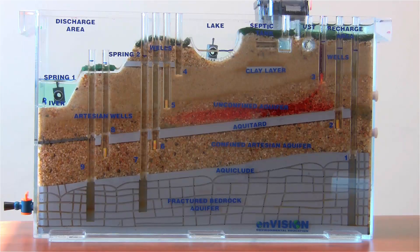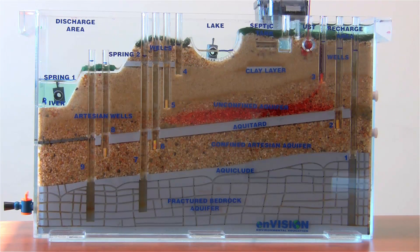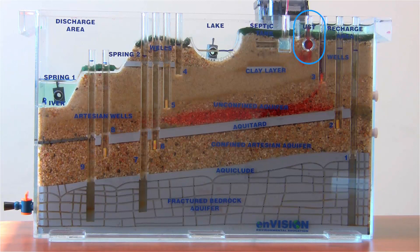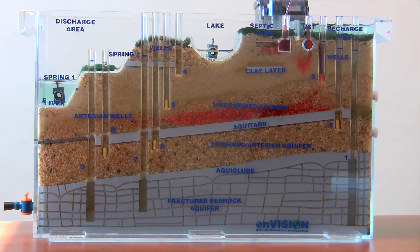For point source pollution, contaminants are concentrated in a smaller area such as a septic tank, underground storage tank, or an oil spill. Let's see where the dye goes if these tanks have a leak.